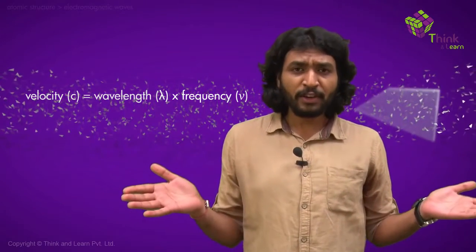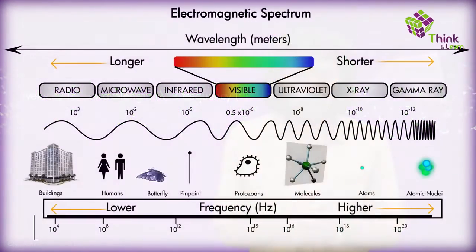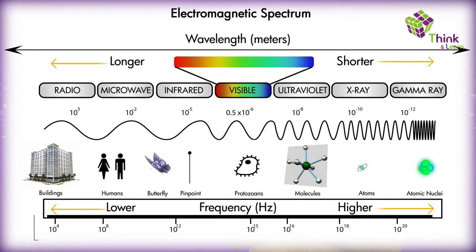Now, just varying these two components—wavelength and frequency—keeping the velocity of light as constant, we get huge different variations of spectrum, which we call the electromagnetic spectrum. Different parts of the electromagnetic spectrum have different frequencies and wavelengths. What we call light or visible light is a very small part of the electromagnetic spectrum.